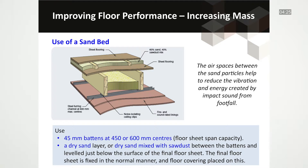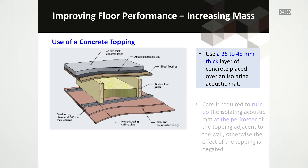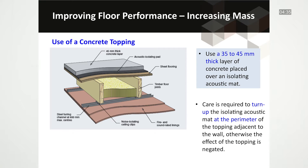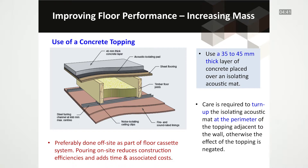Final floor coverings such as overlay timber, feature flooring, carpet, or tiles can then be placed on this floor sheet. A concrete topping slab might also be considered. These are generally 35 to 45mm thick, laid over an isolating acoustic mat. It would be preferable if this could be done off-site as part of a prefabricated floor cassette system, as pouring concrete on-site introduces a wet trade into an otherwise dry system, reducing construction efficiencies and adding time-associated costs.